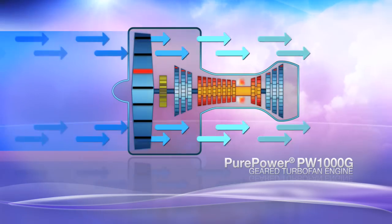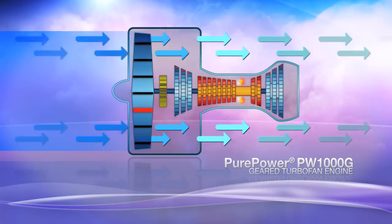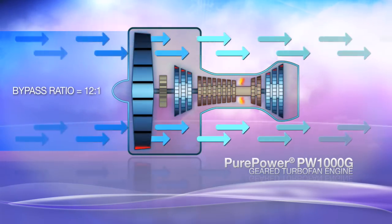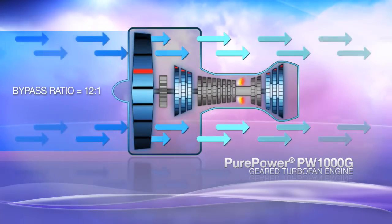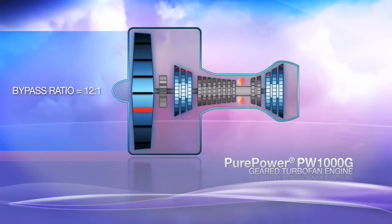The fan runs more slowly, delivering more thrust from less work for an impressive bypass ratio of 12 to 1. The low pressure compressor and low pressure turbine rotate faster than the fan, achieving top performance with fewer stages and fewer parts.